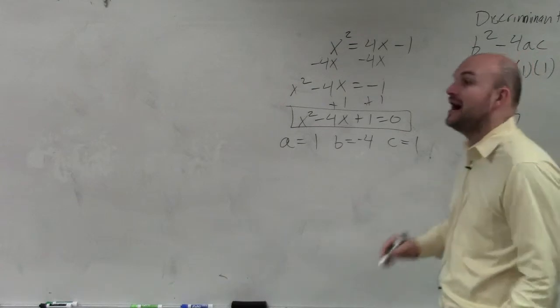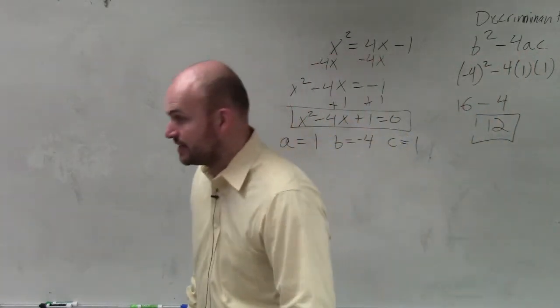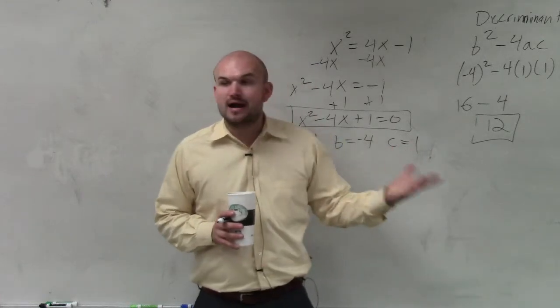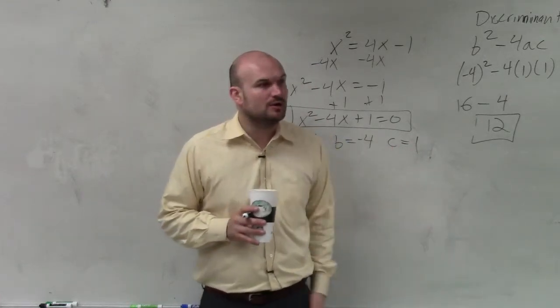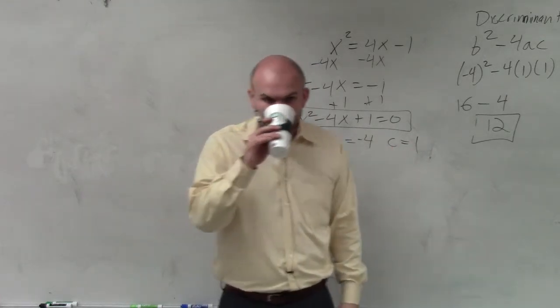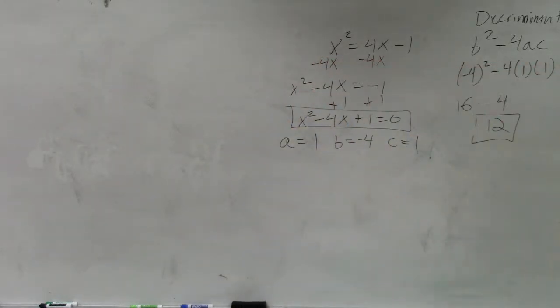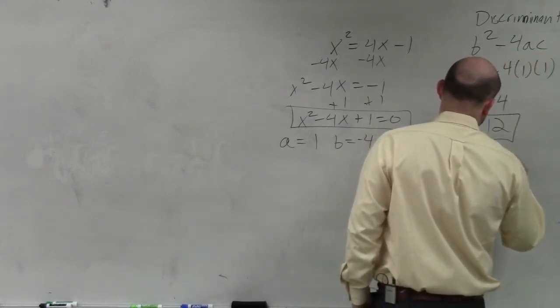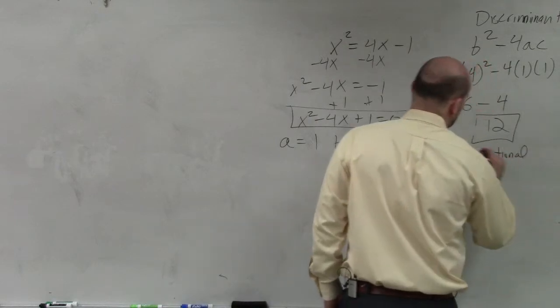Now 12 is positive, so we know there's going to be solutions, right? It's not 0, so we know there's going to be two solutions. Now we need to determine, is 12 a square number or a non-square number? Non-square. It's a non-square number. So based on your notes, since 12 is a non-square number, we're going to have two irrational solutions.